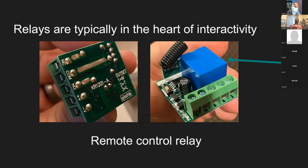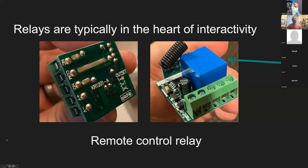All of the different input types have some sort of relay. The remote control relay, for instance, has NC, common, and NO terminals on the bottom, plus a power terminal. If you wire this to a GPIO trigger, the common would be tied to ground and the normally open terminal would be tied to the GPIO.